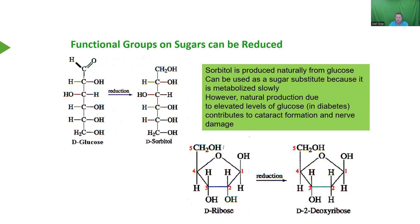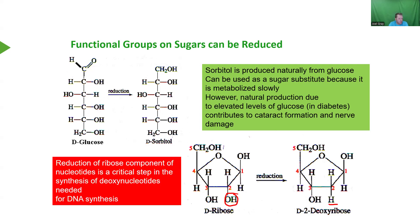Here we have ribose — I mentioned ribofuranose earlier. We can also have 2-deoxyribose: at carbon number two, the hydroxyl group is removed and replaced with a hydrogen. Reduction of the ribose component of nucleotides is a critical step in the synthesis of deoxynucleotides needed for DNA synthesis. If that reduction reaction is delayed, you can't make DNA, your genome is compromised, and you run into serious problems.